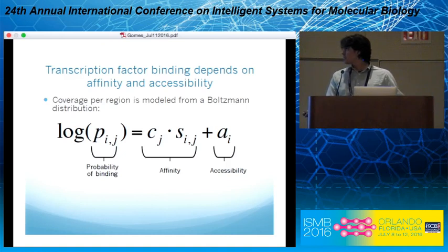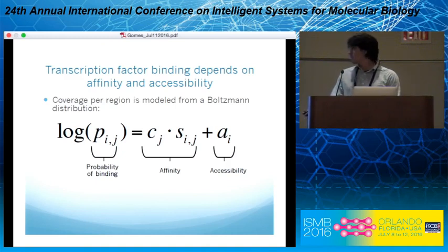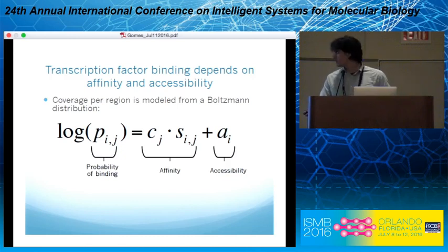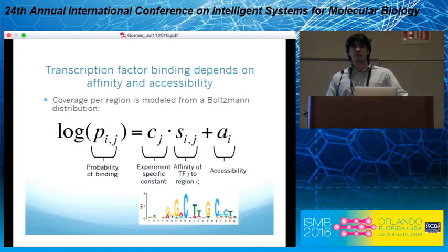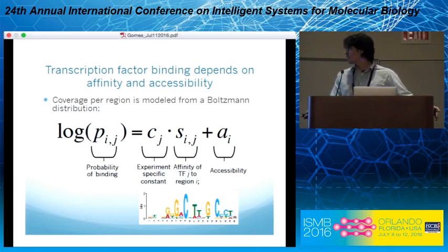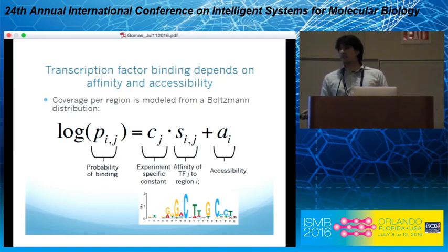In practice, we solve it using a Boltzmann distribution. Taking the exponential or the logarithm on both sides: on the left side we have the probability of binding, which is related to the ChIP-seq coverage; a parameter related to affinity; and another one related to the region accessibility. This affinity parameter can be broken into two pieces — one that is experiment-specific, depending on the condition in which the transcription factor was immunoprecipitated, the concentration of the transcription factor, or whatever experimental details — and the affinity parameter, which you can estimate by matching the motif PWM throughout the genome.